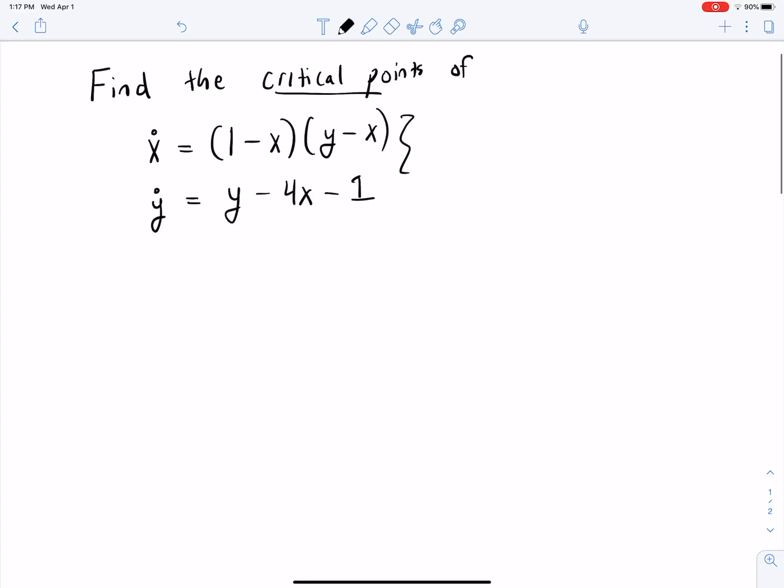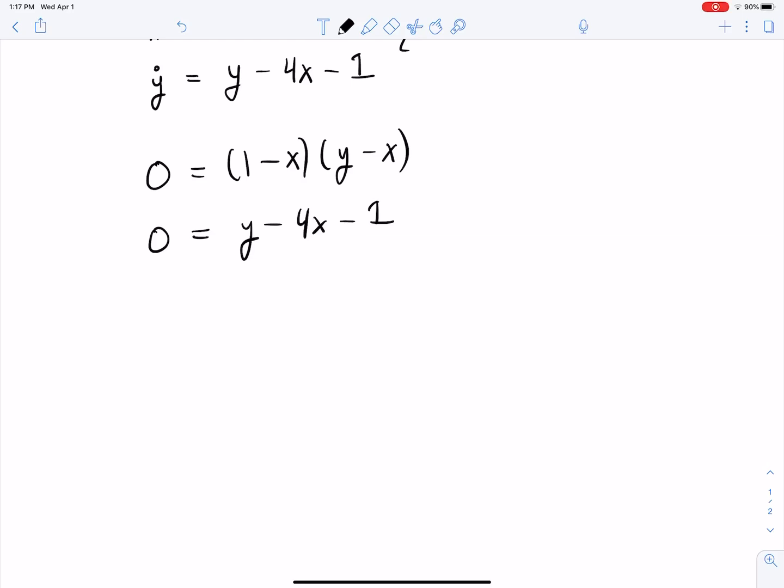So to solve for them we set the derivatives to zero. So I would have zero equals one minus x times y minus x and then zero equals y minus 4x minus one. So this gives me two equations and two unknowns y and x and I need to solve for them. And because they're nonlinear we can end up with more than just one solution. So in particular here we have one minus x and y minus x so the product of that is zero. So that will be zero if one minus x equals zero or y minus x. If either one of those terms are zero then the whole thing will be zero.